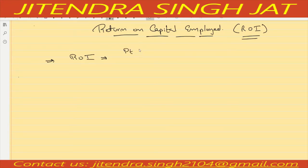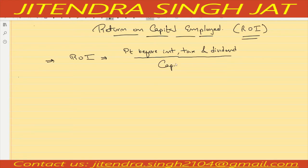The formula of return on investment or return on capital employed is: profit before interest, tax, and dividend, divided by capital employed, multiplied by 100. The purpose of this ratio is to check how much profit a company is earning on the capital which has been invested. More the profit, better the condition; more the ratio, better the operational efficiency of the business.